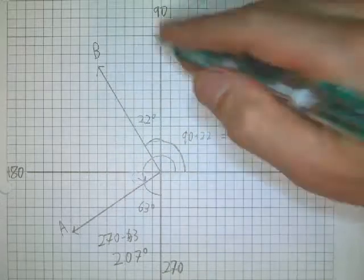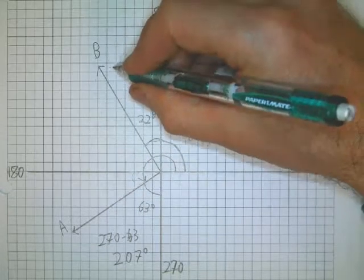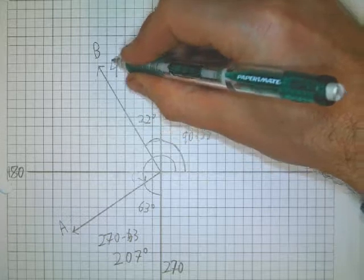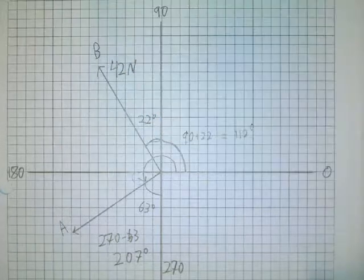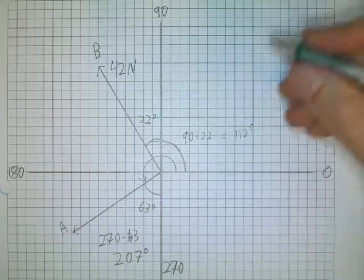So let's suppose B has a magnitude of, say, 42 newtons or anything. It doesn't really matter.